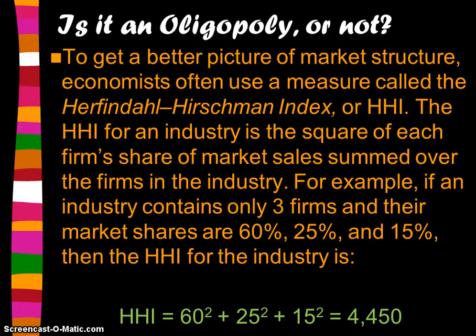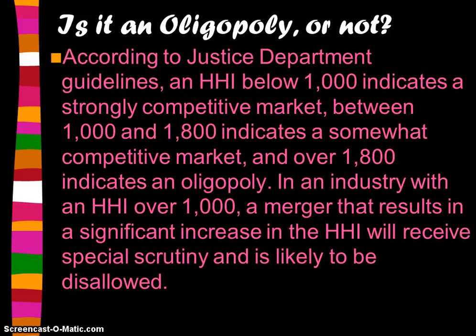According to Justice Department guidelines, an HHI below 1,000 indicates a strongly competitive market. If the HHI is between 1,000 and 1,800, it's a somewhat competitive market, and anything over 1,800 indicates an oligopoly. In an industry with an HHI over 1,000, a merger that results in a significant increase in the HHI will receive special scrutiny and is likely to be disallowed.